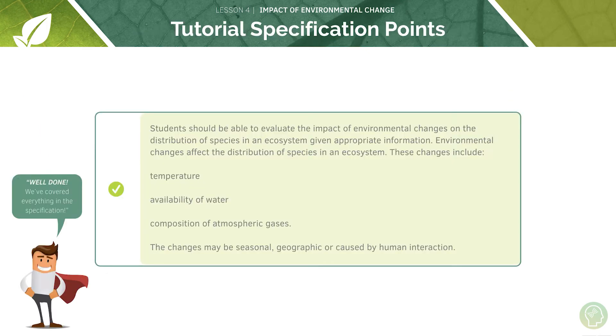So those are your three examples: water, temperature, and composition of atmospheric gases. These changes may be seasonal, geographic, or caused by human interaction.